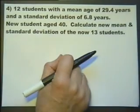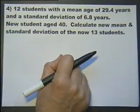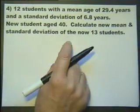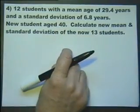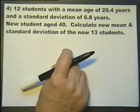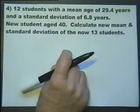An adult class has 12 students with a mean age of 29.4 years and a standard deviation of 6.8 years. A student aged exactly 40 years joins the class. I've just put new student aged 40. Calculate the mean and standard deviation of the 13 students now in the class.